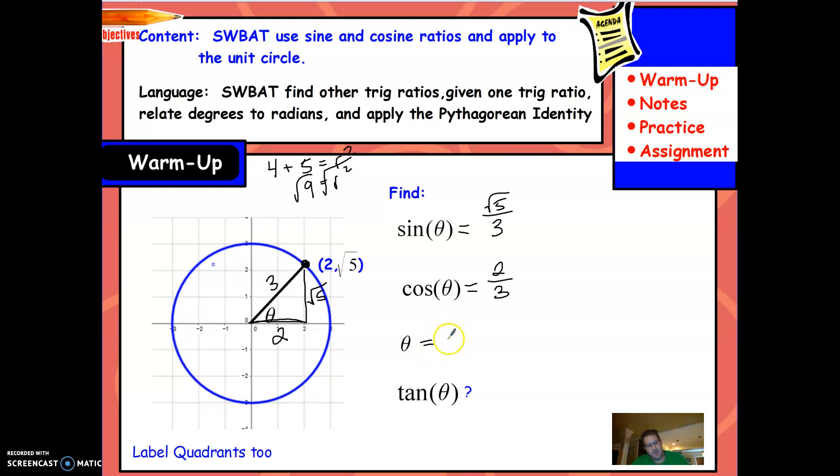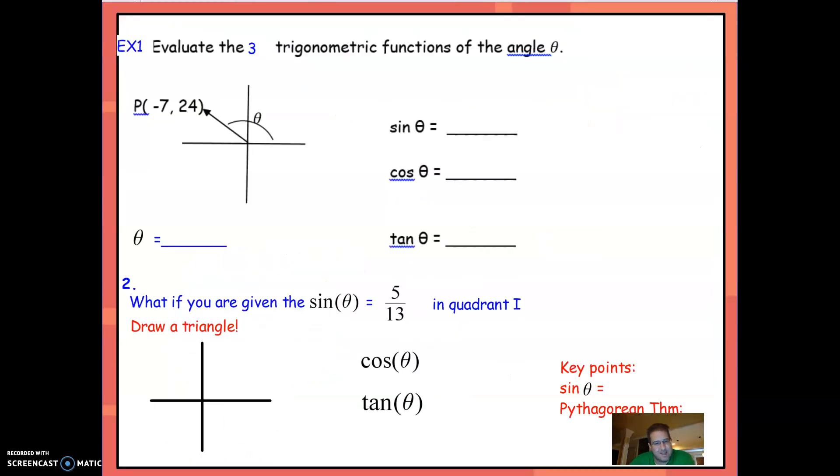Cosine would be 2 over 3, that's x over r. And then to find theta itself, tangent is y over x. So in this case that would be √5 over 2. To find theta, I could simply use the inverse of one of these. So if I do inverse cosine of 2 divided by 3, press enter, you get about 48.19 degrees, which makes sense because that would be in the first quadrant, which it is.